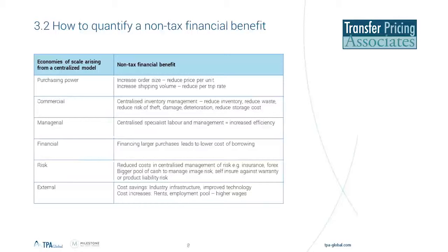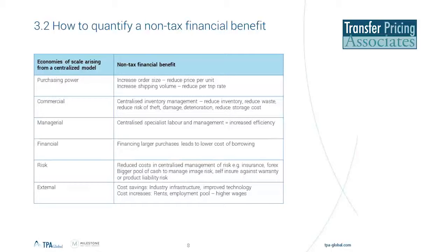There are a number of ways to quantify the non-tax financial benefits, and it's probably going to be a labor-intensive process requiring a look at the supply chain and where value fits. One way would be to look at the economies of scale from a centralized model and come up with certain assumptions and methodologies to quantify that. The easiest example would be a centralized purchasing hub which not merely collects volume discounts, but really has expertise and knowledge in order to get price reductions of, say, 5 to 10 percent.